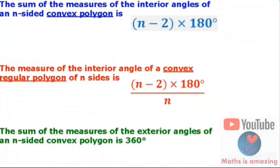Now we have to study the rules for how to find the sum of the measures of the interior angles of an n-sided convex polygon. A convex polygon doesn't have any reflex angle.